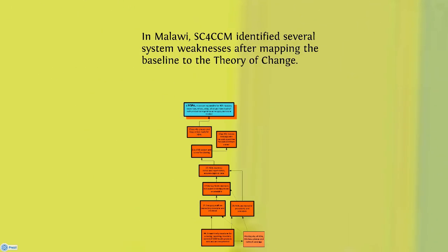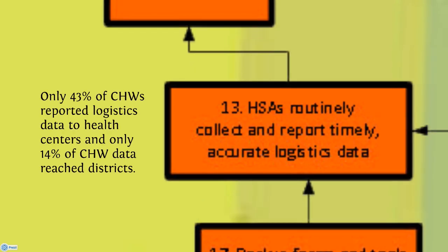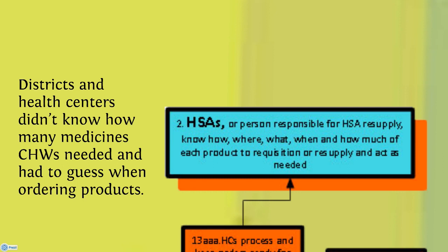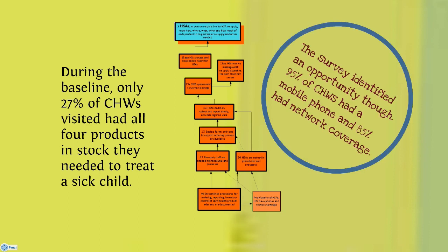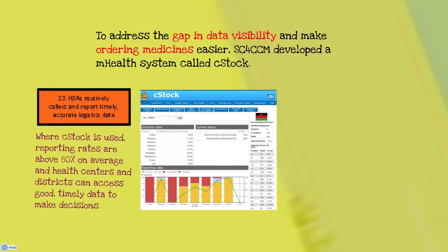In Malawi, SC4CCM identified several system weaknesses after mapping the baseline to the theory of change. Only 43% of CHWs reported logistics data to health centers, and only 14% of CHW data reached districts. Districts and health centers didn't know how many medicines CHWs needed and had to guess when ordering products. During the baseline, only 27% of CHWs visited had all four products in stock needed to treat a sick child. However, the survey identified an opportunity: 95% of CHWs had a mobile phone and 85% had network coverage. To address the gap in data visibility and make ordering medicines easier, SC4CCM developed a mobile health system called C-Stock.